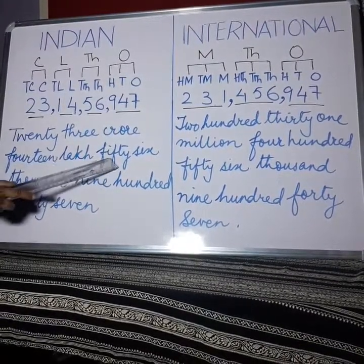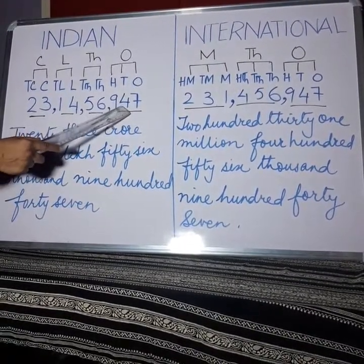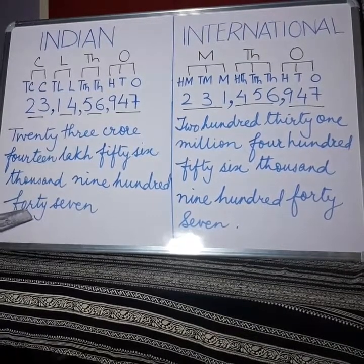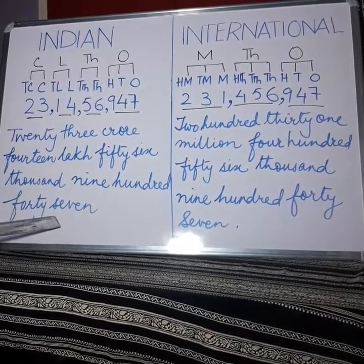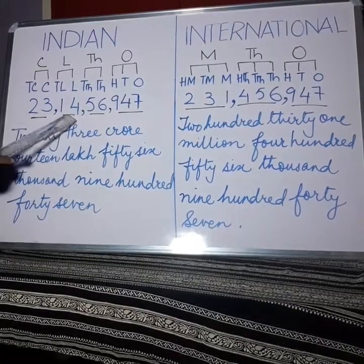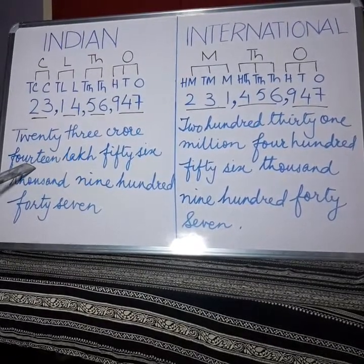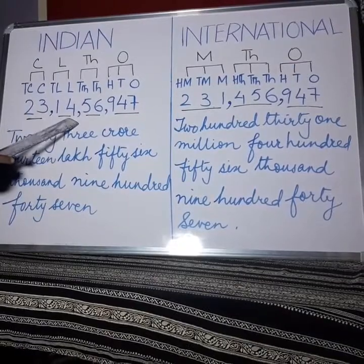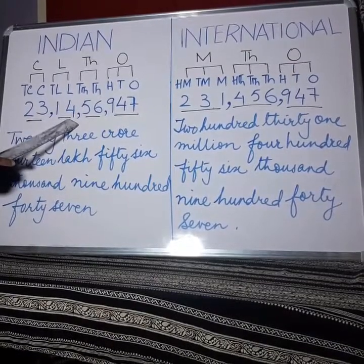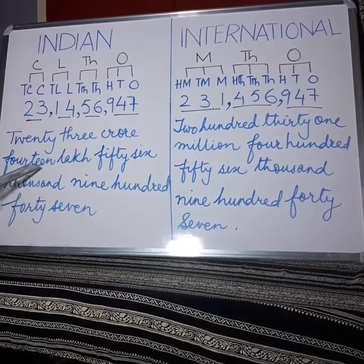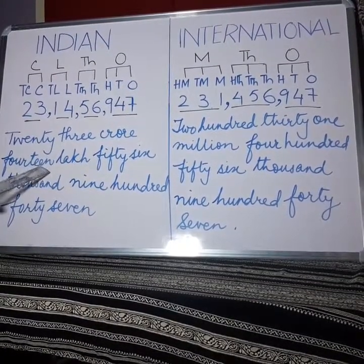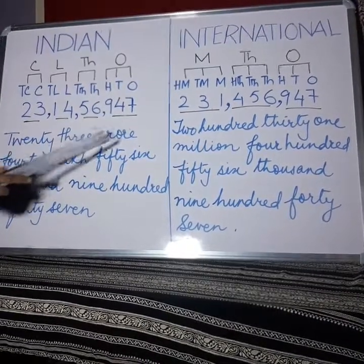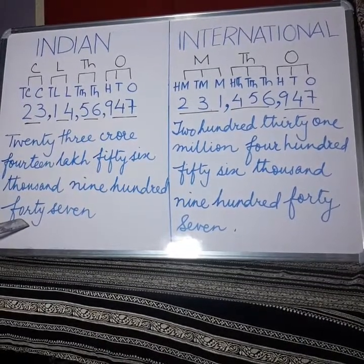Here, note the spelling of 40 is F-O-R-T-Y. Whereas 14, we write F-O-U-R-T-E-E-N. So the spelling of 4 is F-O-U-R, and 14 is F-O-U-R-T-E-E-N. But when we say 40, the U is missing — it becomes F-O-R-T-Y.